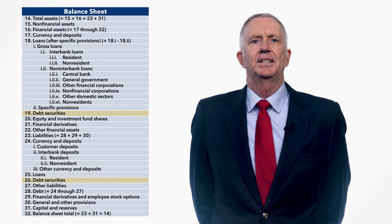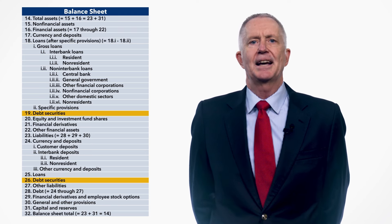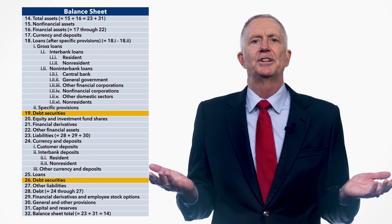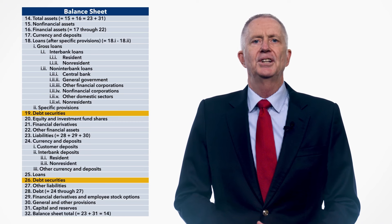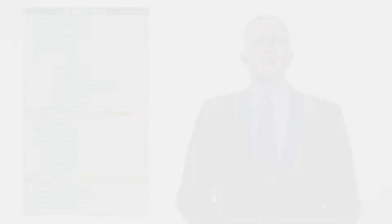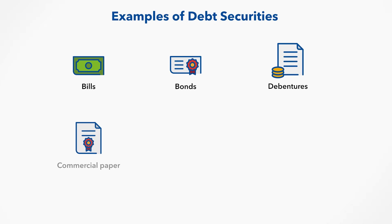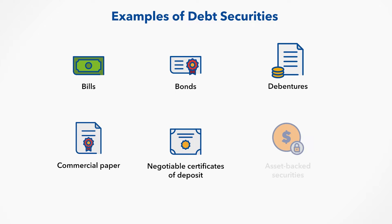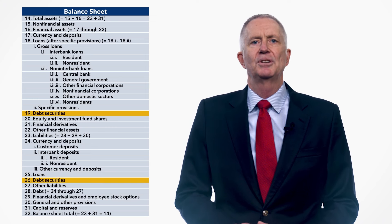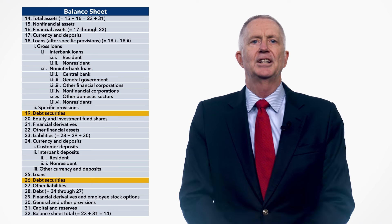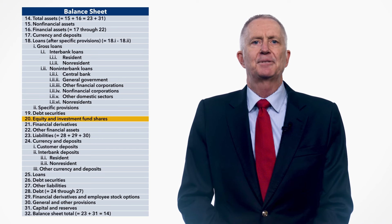Debt securities, lines 19 and 26, are negotiable financial instruments serving as evidence that units have obligations to settle by means of providing cash, a financial instrument, or some other type of economic value. Debt securities give the holder an unconditional right to receive interest and/or principal payments. Examples of debt securities include bills, bonds, debentures, commercial paper, negotiable certificates of deposit, and asset-backed securities. Debt securities may be held as assets, line 19, or may be issued as liabilities providing a funding source, line 26, for the deposit taker.